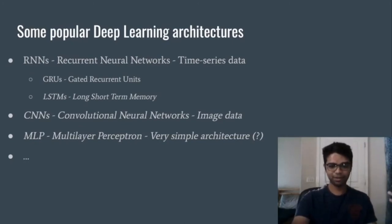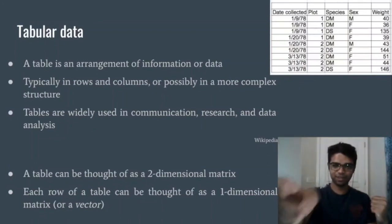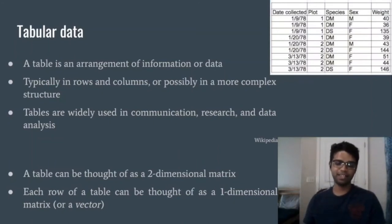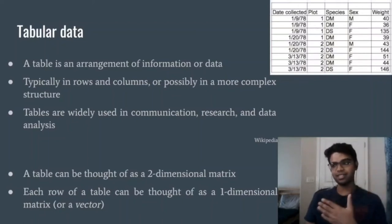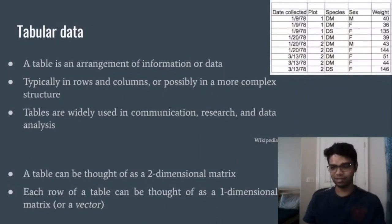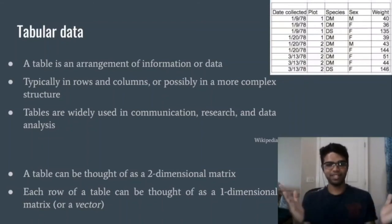Now let us talk about what tabular data exactly is. I am sure you have a good intuition already. On the top right I have shown a table with 5 columns — date, plot, species, sex, and weight — and about 10 values for each column, so a table with around 11 rows and 5 columns. A table is just a representation of data — an arrangement of information. A two-dimensional table consists of rows and columns: rows are horizontal and columns are vertical.